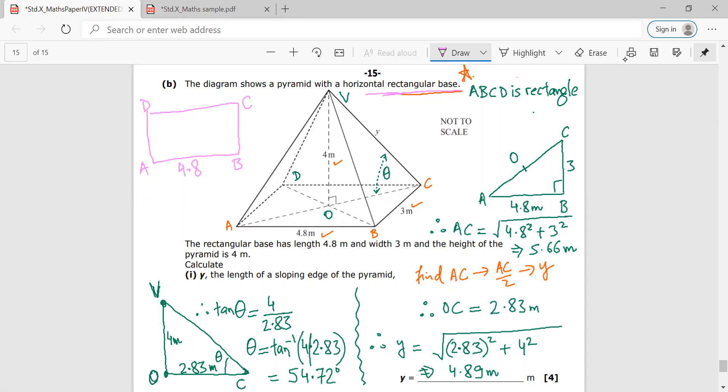So AB would be 4.8 meters, BC would be 3 meters. And this would be one of the diagonals. And this would be the second diagonal. Is there a problem? No sir.